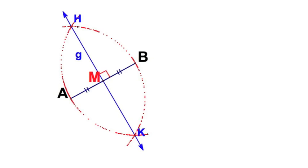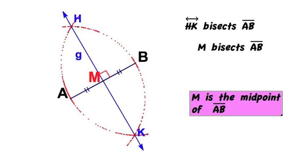We're just concerned with the bisecting part now. So, let me express this a few ways. HK, the line HK bisects AB. The point M bisects AB. I could also say M is the midpoint of the segment AB.